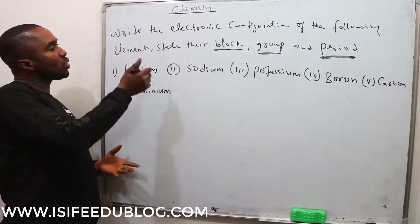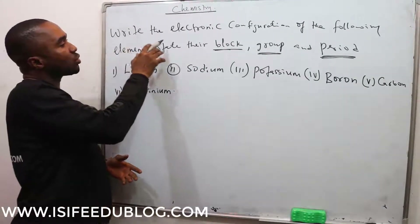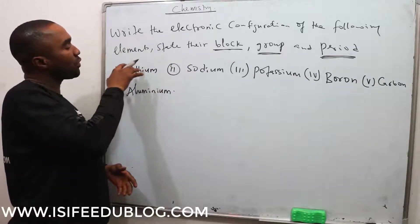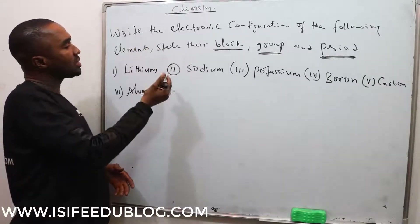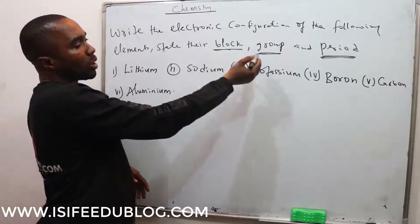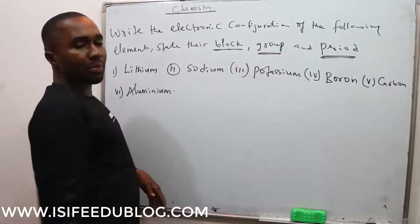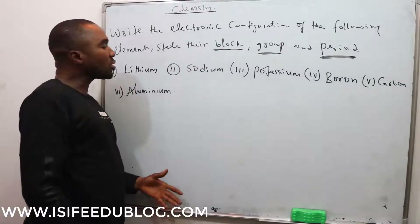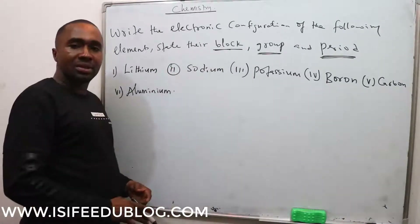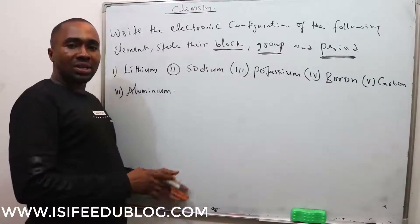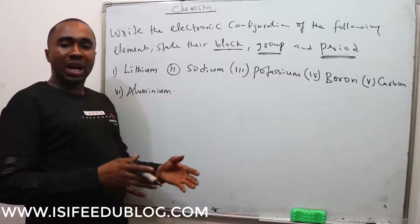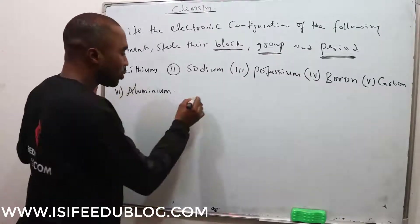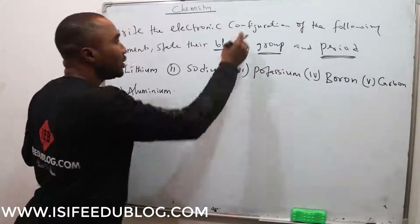From this question, we are asked to write the electronic configuration of the following elements, then state their block, group, and their period. We are going to write the electronic configuration of all these elements, state their block, their group, and their period. Solution to the question now: